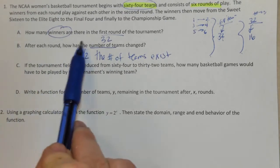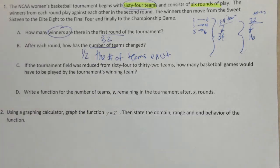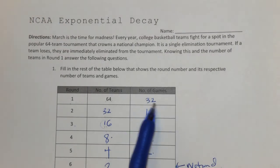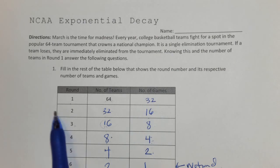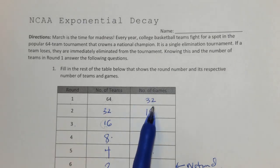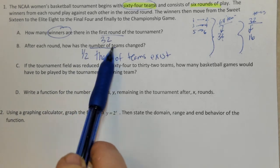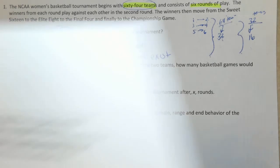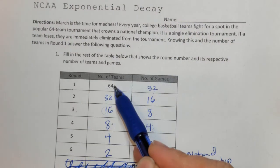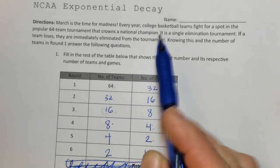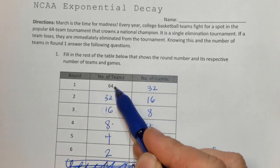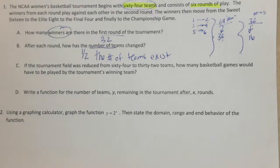How many winners were there in the first round? 32 games in the first round, with only 1 winner per game — so 32 winners. After each round, how has the number of teams changed? Number of teams: 64, 32, 16. After each additional round, the number of teams is cut in half — or half the number of teams exists after each round.